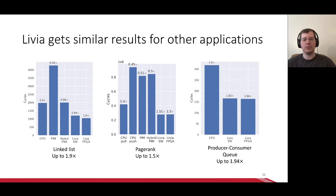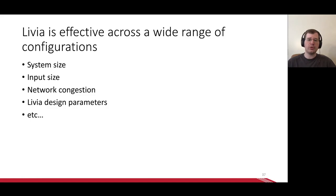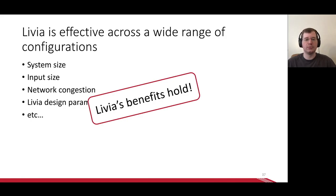Briefly looking at other workloads, we see similar speedups. Linked list is up to 91% faster, page rank up to 51% faster, and the producer-consumer queue up to 94% faster. We also did a large number of sensitivity studies, varying system size, input size, network congestion, Livia design parameters, and more, and the takeaway is Livia's benefits hold.